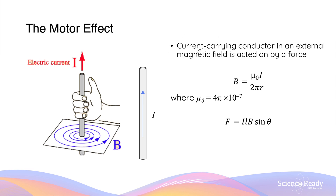The motor effect refers to the phenomenon when a current-carrying conductor is placed within an external magnetic field. When this occurs, the conductor is acted upon by a force, specifically an electromagnetic force. When a current flows through a straight conductor, a radial magnetic field is produced.